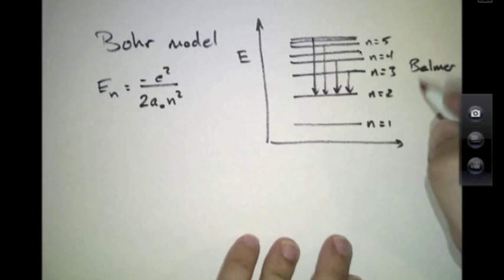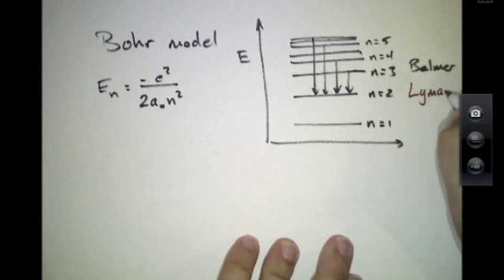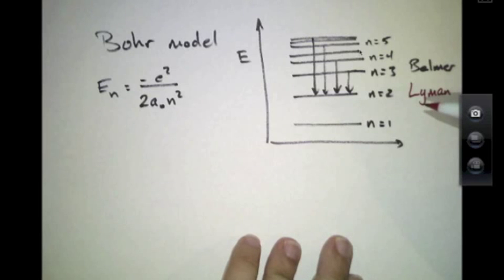The Lyman series, which we'll recall, is that series in which the final resting place of the electron is not the n equals 2 location, but the n equals 1,